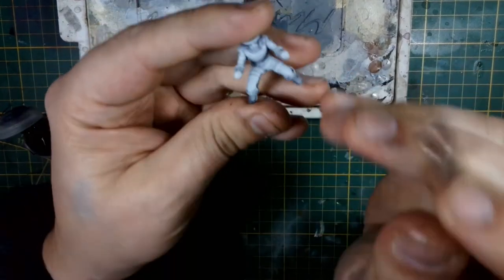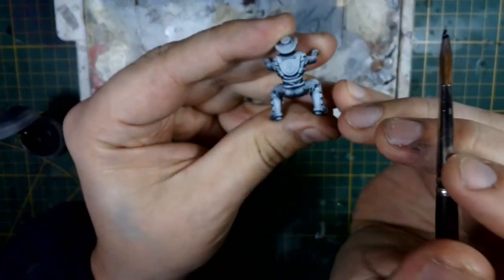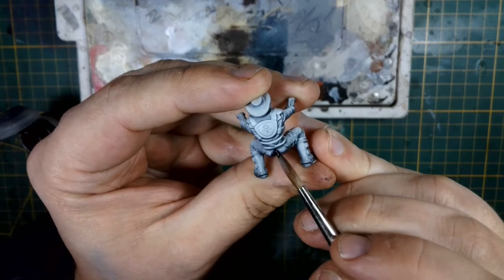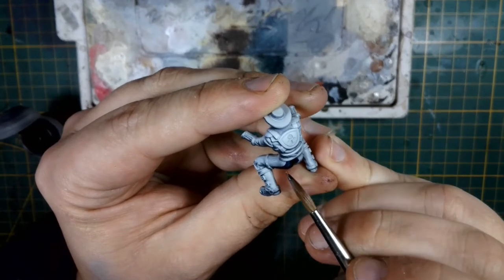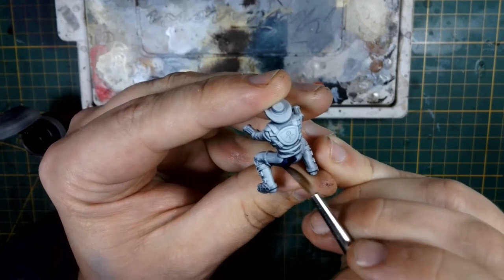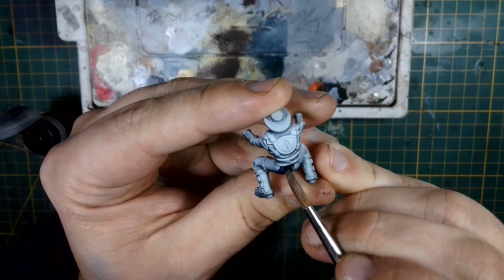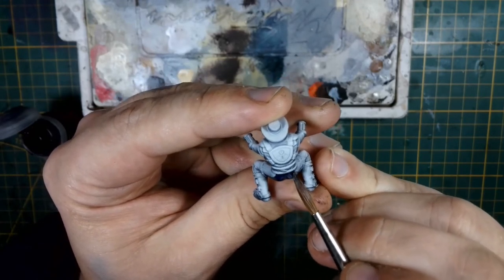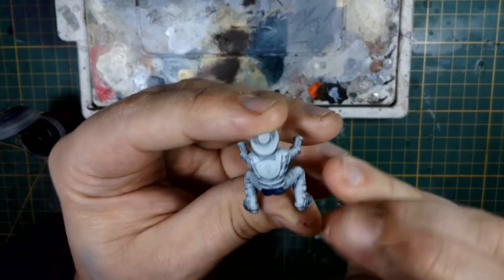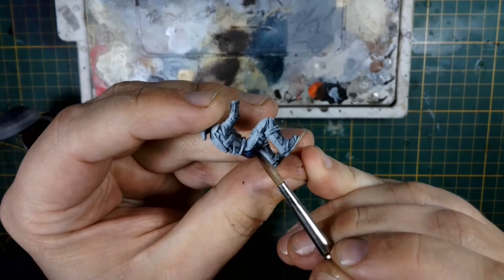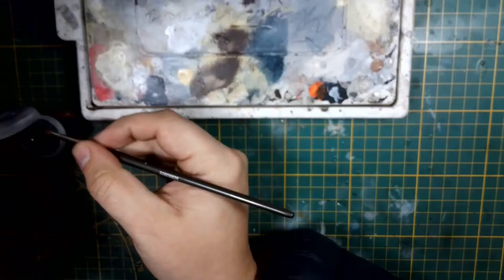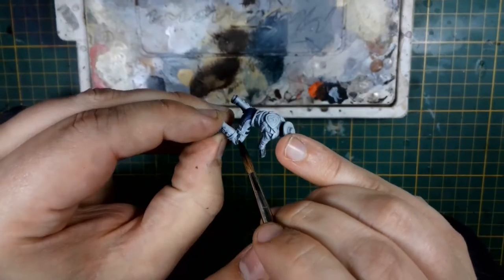Now, for this miniature we'll be starting over a zenithal primer layer where we primed the model black first and then applied a light grey at a 45 degree angle from the top to create some shadows and volumes on our model. This is perfect for the contrast paints because then you get some more interesting shading, not just recess shading like the contrast paints are known to do.